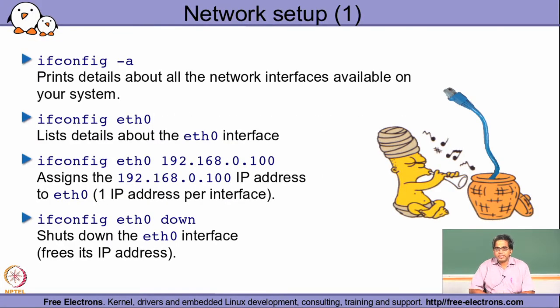In this module we will be looking at some of the simple commands that we need to run to configure our Linux system for enabling the networking part of it. A system could really have multiple Ethernet ports which are available — those Ethernet ports could be on the board or connected as an add-on card. For any kind of port, whether on the board or as an add-on card, there has to be a configuration done, and this configuration is typically on a per port basis.